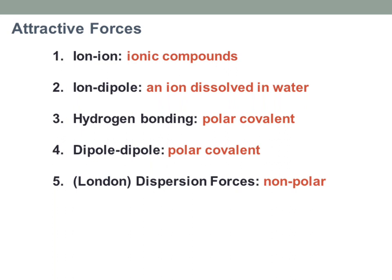Hydrogen bonding is a type of dipole-dipole — it's just a really strong type of dipole-dipole — and it occurs in polar covalent compounds that have those hydrogen bonds. And then the other types of dipole-dipoles: hydrogen bonding is a special type, so we call some of them hydrogen bonding and some of them just regular dipole-dipoles.